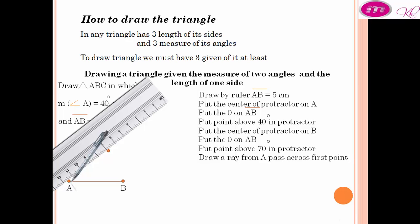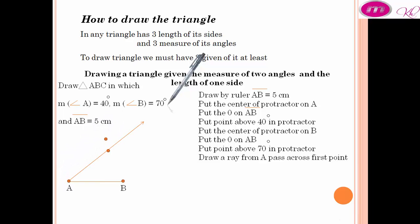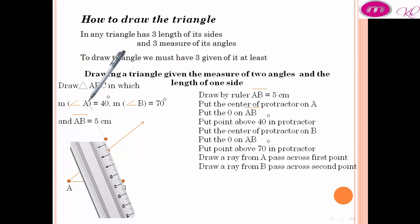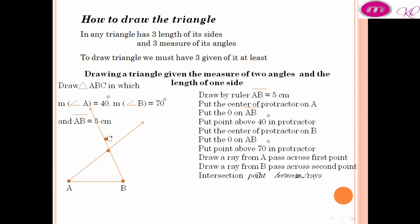Draw ray from A passing across the first point. Draw ray from B passing across the second point. The intersection point between the two rays is C.